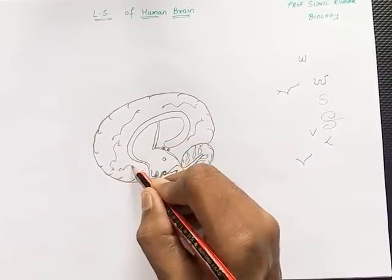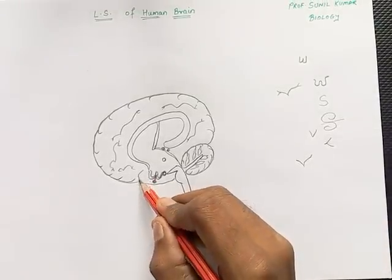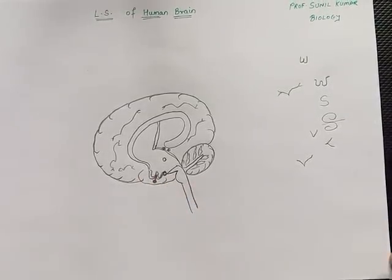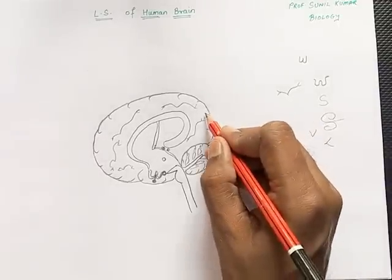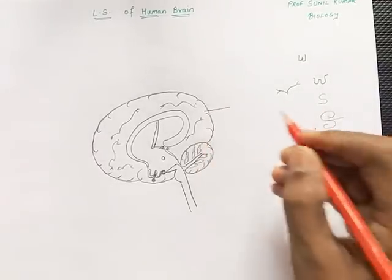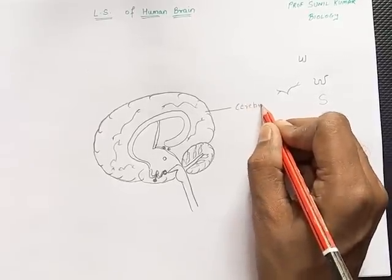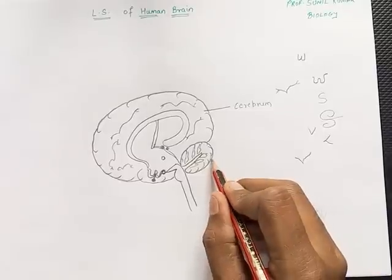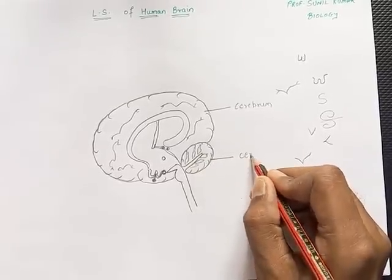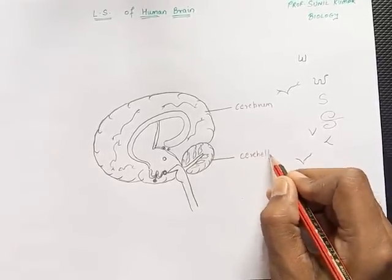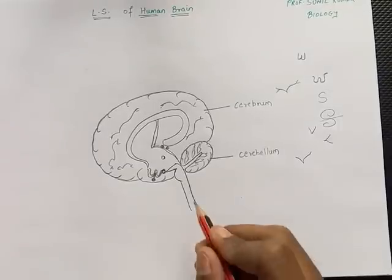As far as labeling is concerned, we need to label each and every part of the brain. This largest portion of the brain is called the cerebrum. This is the cerebellum — the second largest part of the brain — basically meant for maintaining equilibrium and coordination.